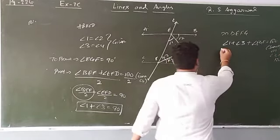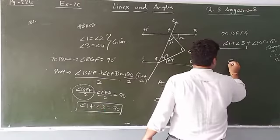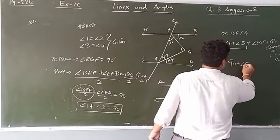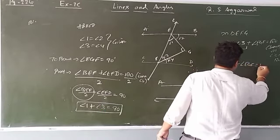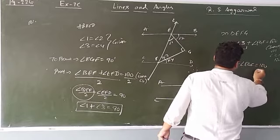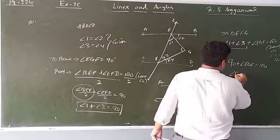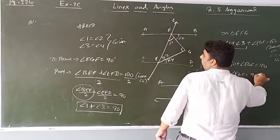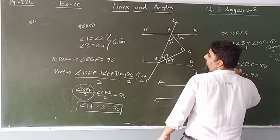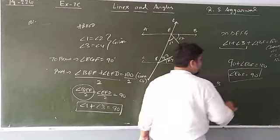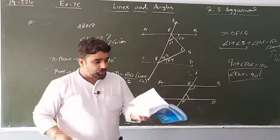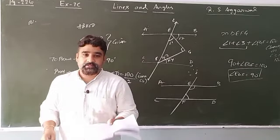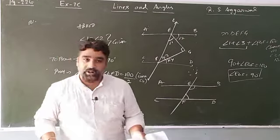Angle 1 plus angle 3 is 90 degrees. So 90 plus angle EGF equals 180 degrees. Therefore angle EGF equals 90 degrees — which is what we had to prove. Question number 19 you will try on your own. That will be all for today. Thank you.